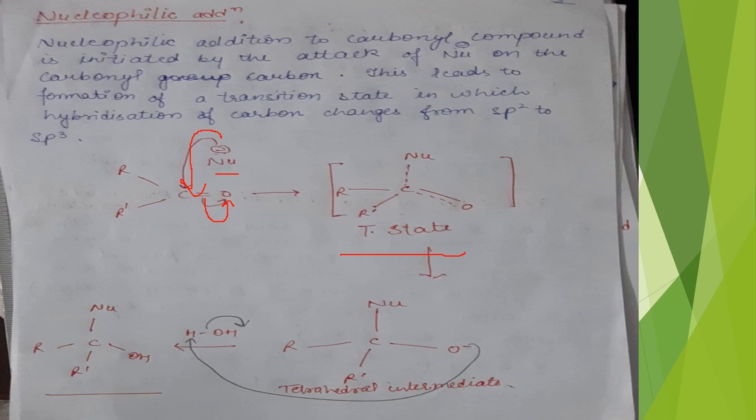The dashed line shows the new bond being formed with carbon, and the oxygen is represented by a dash. This is the transition state, after which the new bond is complete.